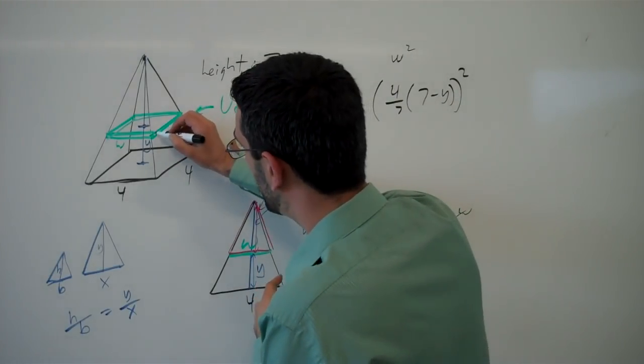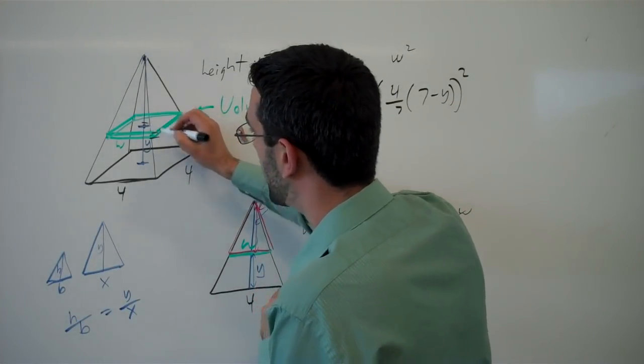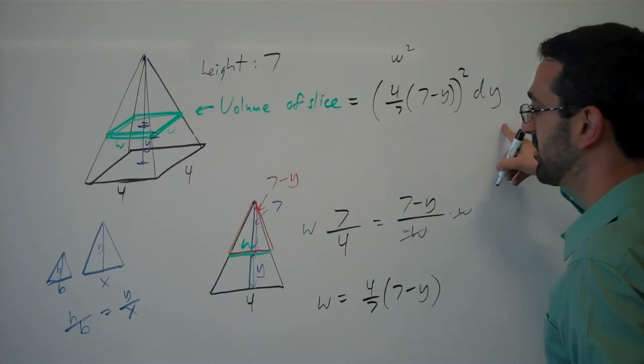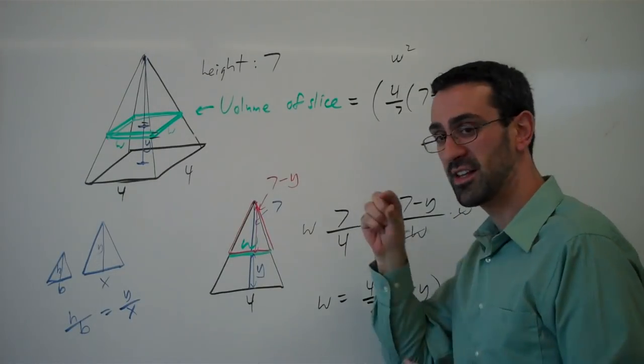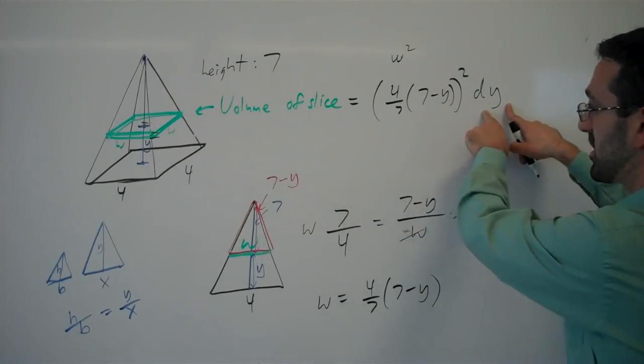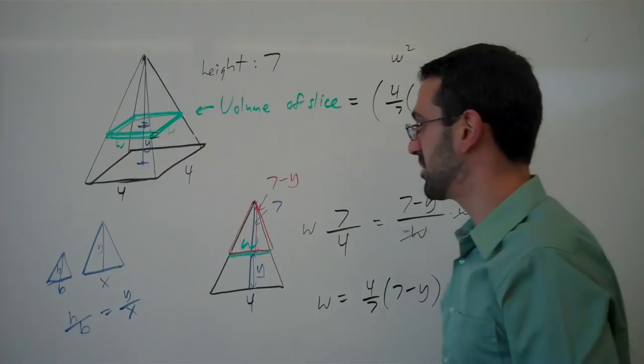Which in this case is four-sevenths times seven minus y squared times the thickness. Now the thickness is some little change in y, right? Some tiny little y amount. So dy for the thickness of that slice. So area of the face times the thickness giving me the volume of the slice.